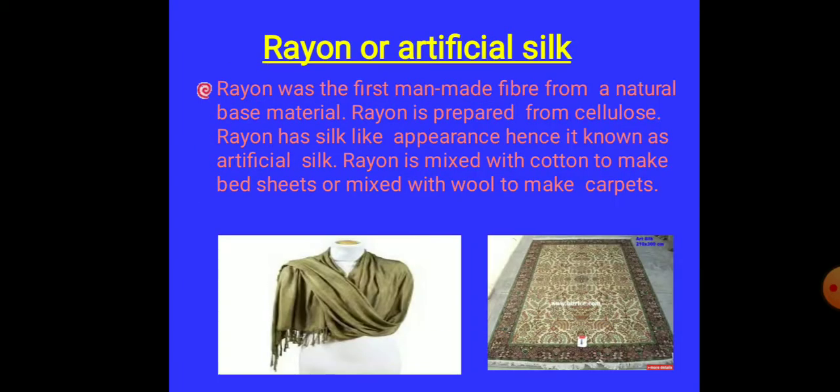Let's talk about rayon. Rayon was the first man-made fiber from a natural base material. That's why it is called semi-silk artificial fiber. Why semi-artificial silk? Because it is made up of wood pulp and wood pulp is natural. It appears like silk. That's why it is cheaper than silk. We are using rayon fibers to make lots of articles, for example, shawls, carpets, and materials.